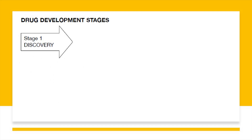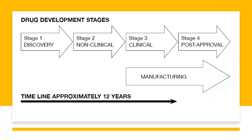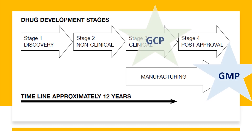Let us see the stages of the drug development process before we start our module. The first stage is drug discovery, next is the non-clinical phase, then the clinical phase, then post-approval, and finally manufacturing. Good manufacturing practices apply to manufacturing, good clinical practices apply to the clinical phase, and good laboratory practice applies to non-clinical studies.